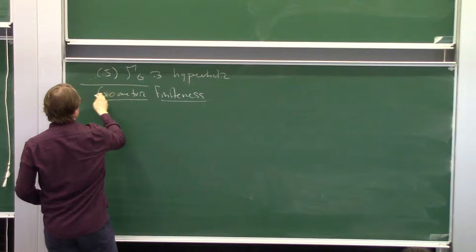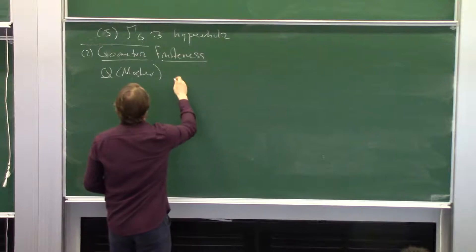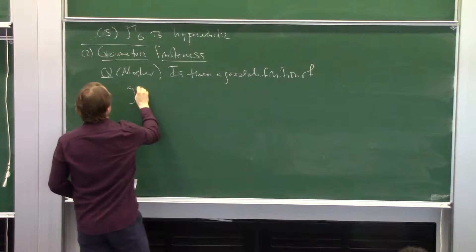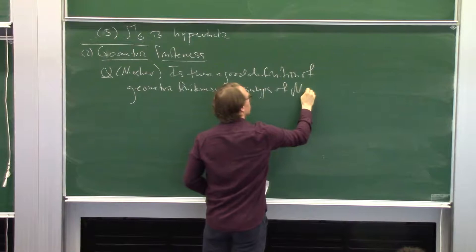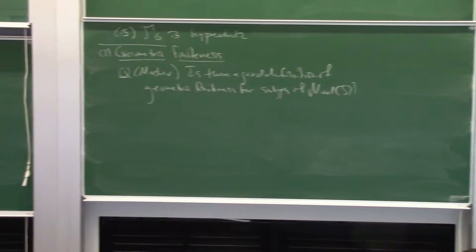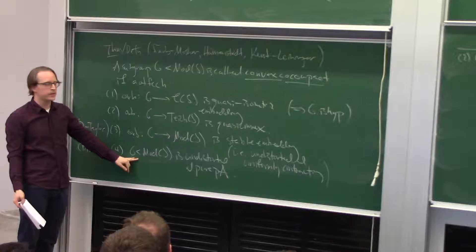I'm not going to give a definition of geometric finiteness just yet — maybe I'll write down some things it could be. I want to start with a question of Farb, which is: is there a good definition of geometric finiteness? Whatever this should mean, if we want to say something reasonable about the geometry of the extension group, we'll probably want the group to be undistorted in the mapping class group.